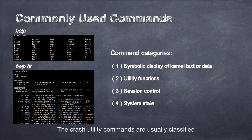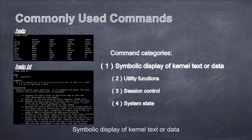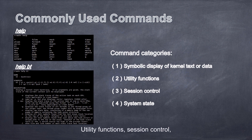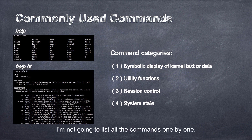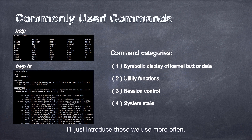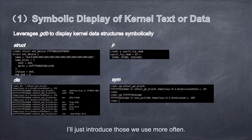The crash utility commands are usually classified into four categories: symbolic display of kernel text or data, utility functions, session control, and system state. For each category, I'm not going to list all the commands one by one — I'll just introduce those we use more often.